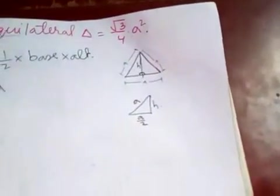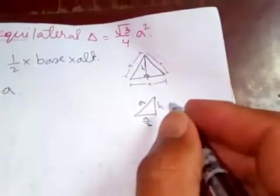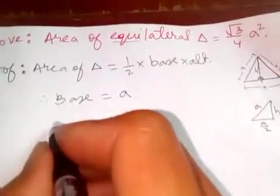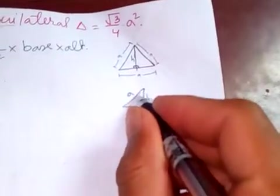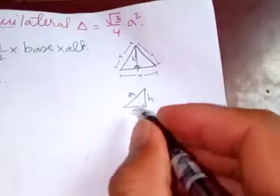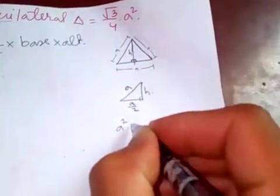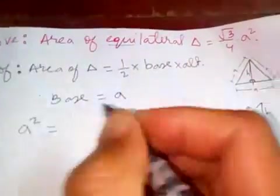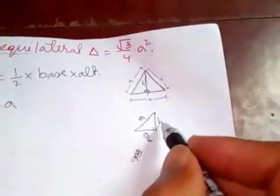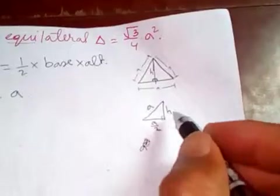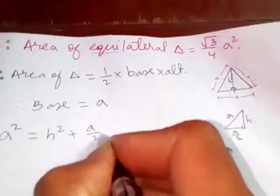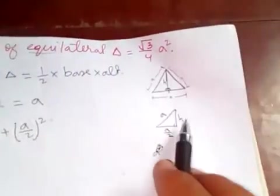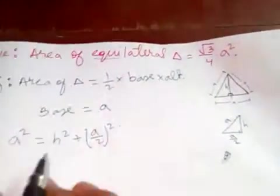From this, h can be found. We need to use Pythagoras theorem here. This is opposite to 90, so the hypotenuse squared is equal to the sum of the squares of the other two sides, which is h² + (a/2)².